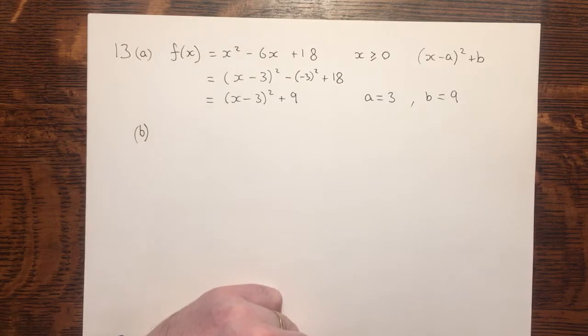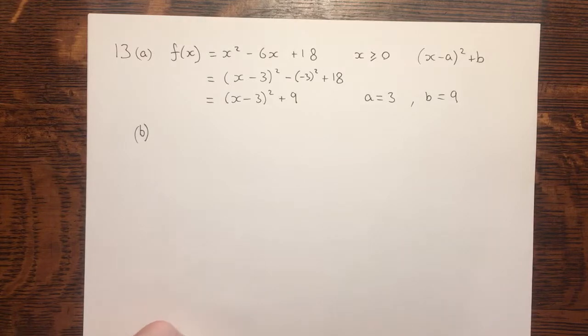In part b, we're asked to sketch this curve, showing the y-intercept, which is point P, and the minimum point Q, and give their coordinates.